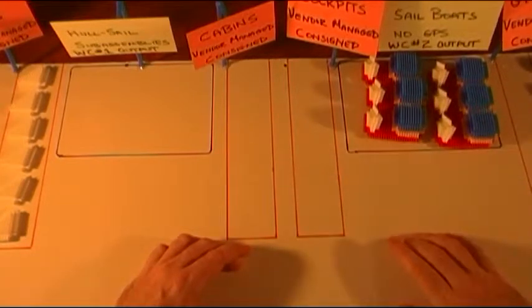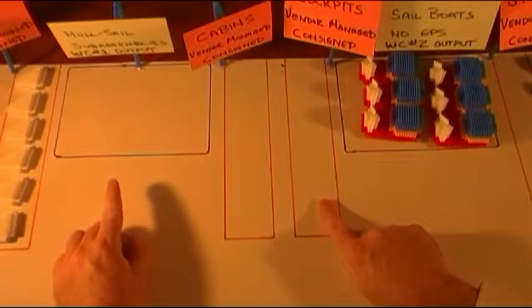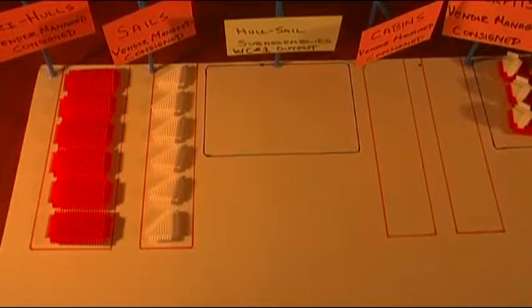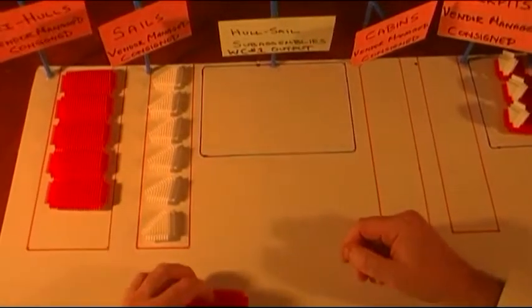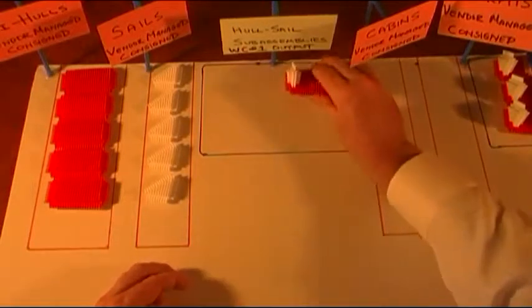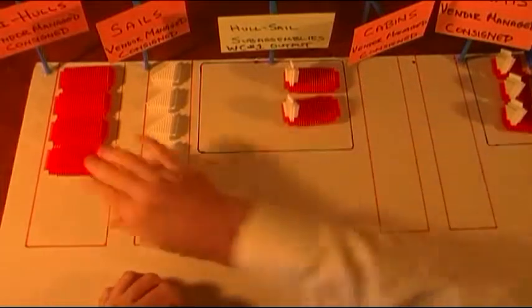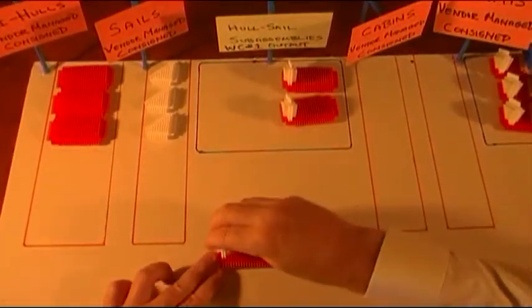All right, now the signal is being sent. We need raw material and we also need sub-assemblies number one. So that's going to translate into we need to build some hull and sail assemblies and fill this Kanban.